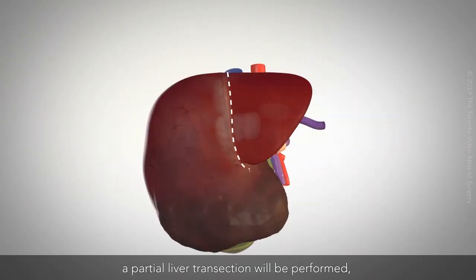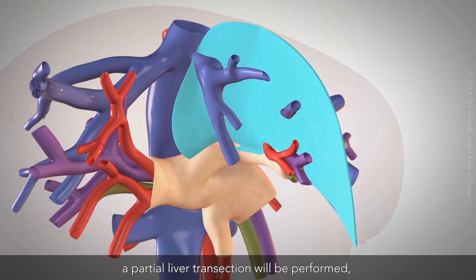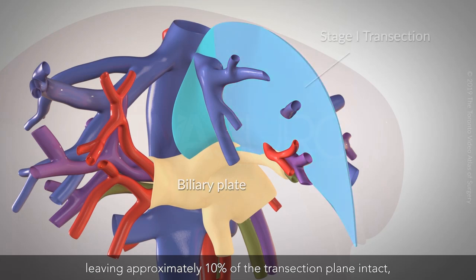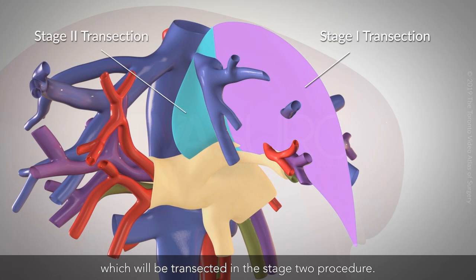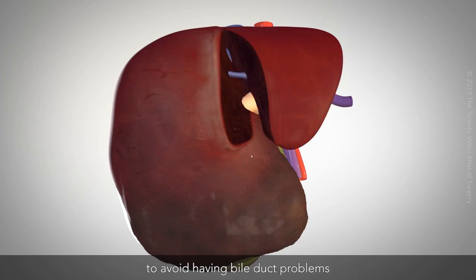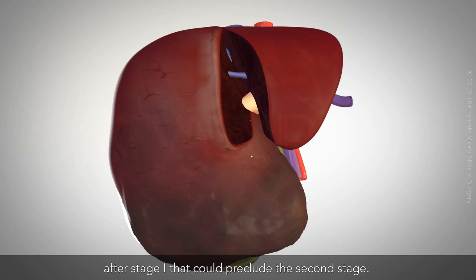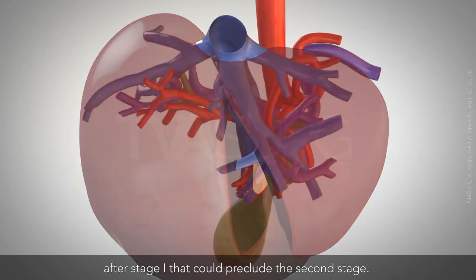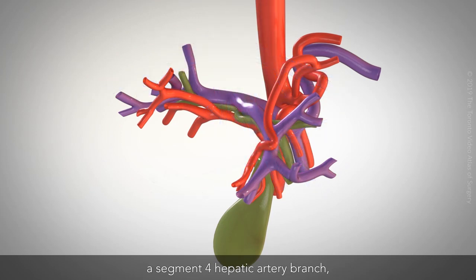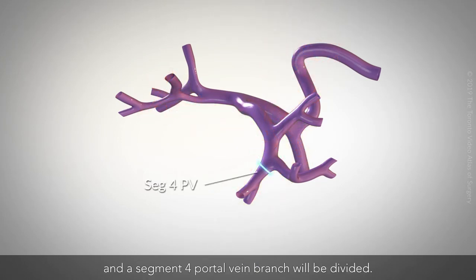In Stage 1, a partial liver transection will be performed to the level of the biliary plate, leaving approximately 10% of the transection plane intact, which will be transected in the Stage 2 procedure. The transection is done to the level of the biliary plate to avoid bile duct problems after Stage 1 that could preclude the second stage. A Segment 4 hepatic vein branch, a Segment 4 hepatic artery branch, and a Segment 4 portal vein branch will be divided.